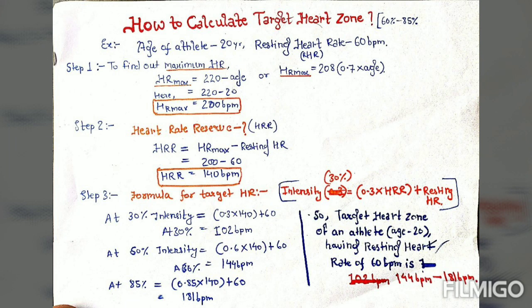The next step is to find the Heart Rate Reserve (HRR), which is the range an athlete can achieve from resting heart rate to maximum heart rate. The formula is: HRR = Maximum Heart Rate minus Resting Heart Rate. So HRR = 200 − 60 = 140 beats per minute.